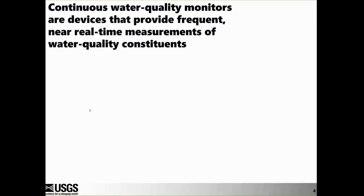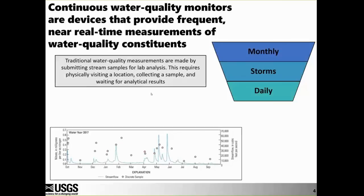Continuous water quality monitors are devices that provide frequent, near real-time measurements of water quality constituents. This contrasts with traditional water quality measurements, which require someone to physically visit a location, collect a water sample, bring it back, process it, submit it to a lab, and wait for results — which can be done monthly, targeting storms, or on a daily basis.